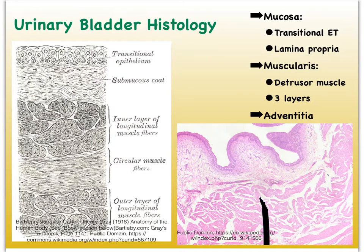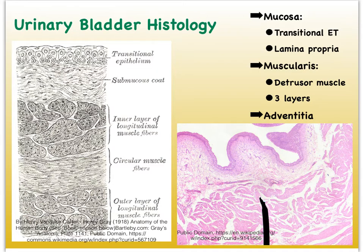The bladder is also lined with transitional epithelial tissue, as seen in the diagram and photo. It rests on a layer of loose areolar connective tissue and then more connective tissue — the submucosa. Then we have the detrusor muscle, which is made up of three distinct layers: two longitudinal smooth muscle layers that follow the length of the bladder, and a circular layer in the middle that goes around the circumference. Finally, there is an adventitia, as this structure sits retroperitoneally.